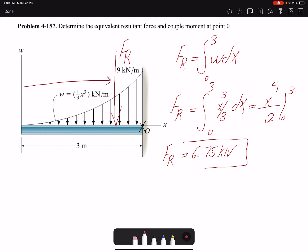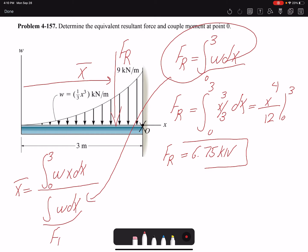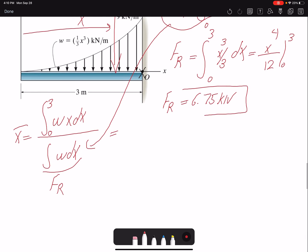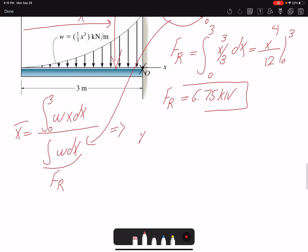If I want to find the location x̄ of FR, again based on the definition, in the denominator I have the integral of w dx from 0 to 3, which is simply FR. We already found this, so I don't need to calculate it again. I'll just replace it here.